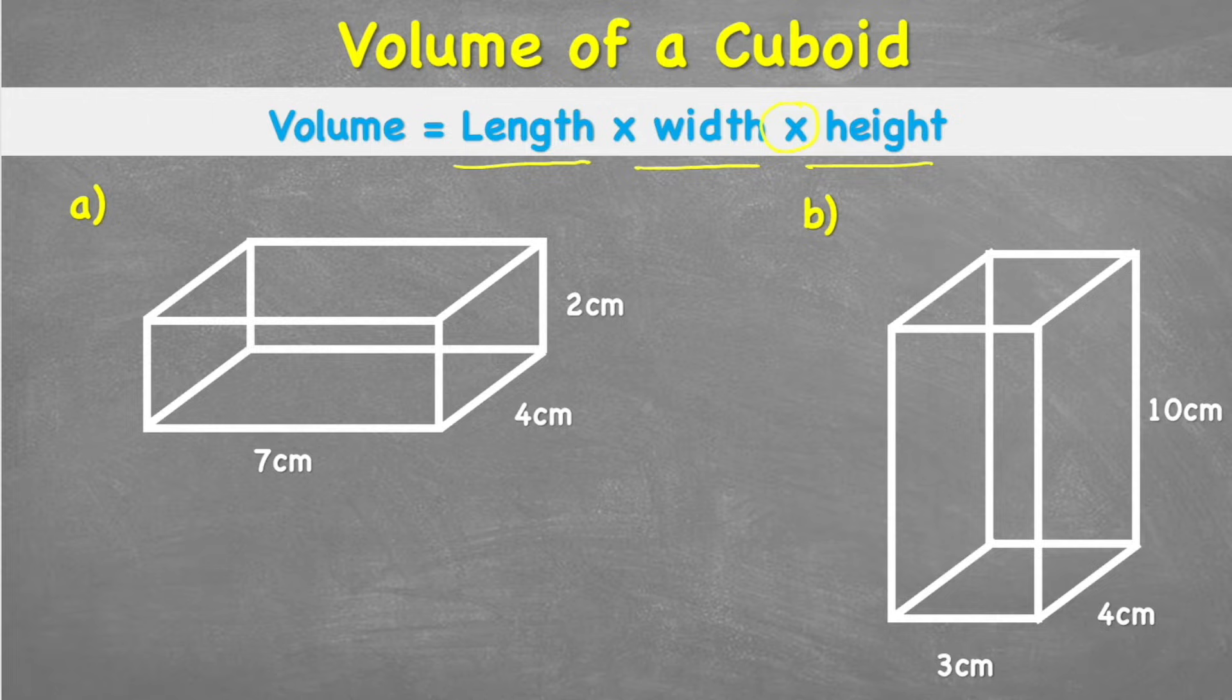But because we know it's multiplication, and multiplication is commutative, it doesn't really matter which way around we put these measurements, we are still going to get the same answer.